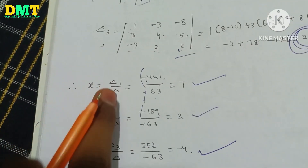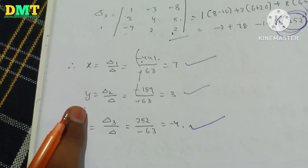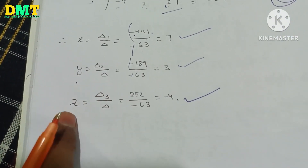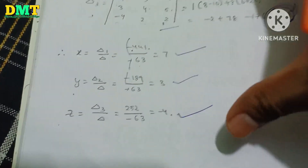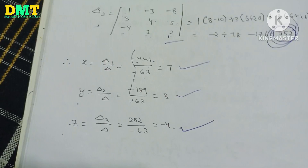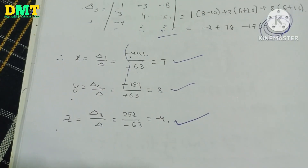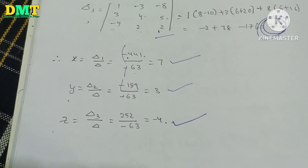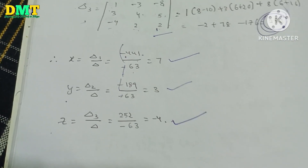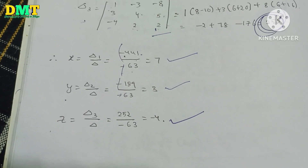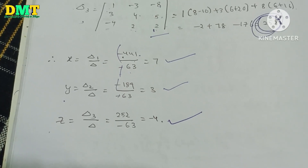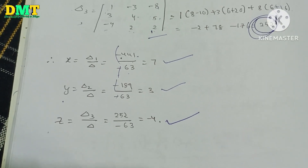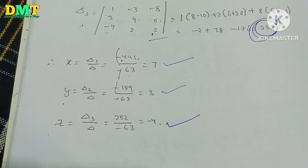So x1 by delta, y2 by delta, z3 by delta — these are the values we find out. It's easy to find out. If you want notes, you can send us a WhatsApp message.